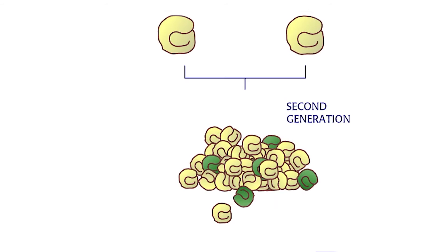While crossing the first generation peas, he found some offspring were green in the next generation. With certain experiments, Mendel figured out the basic rules of inheritance and how the green color reappeared.